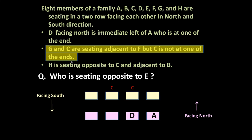Next: H is sitting opposite to C and adjacent to B. H is sitting opposite to C, so if C is here, H cannot be opposite to C — that position would be opposite D. If C is in the other position, then it is possible. H is sitting opposite to C, so C is here and H is here. C cannot occupy the first position because opposite to that would be D, not H. H is also adjacent to B, which means B is here.